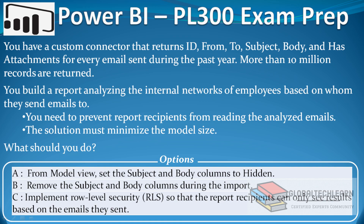As per the requirement, we have to analyze internal networks of the employees based on whom they sent emails to. That means we have to check in the 'from' and 'to' fields whether the given domain is an internal or external domain — by domain meaning such as yahoo.com or rediff, etc. The next requirement is we need to prevent recipients from reading the analyzed emails, meaning the subject and body fields should not be available to users. And the last requirement is the model size should be minimum.